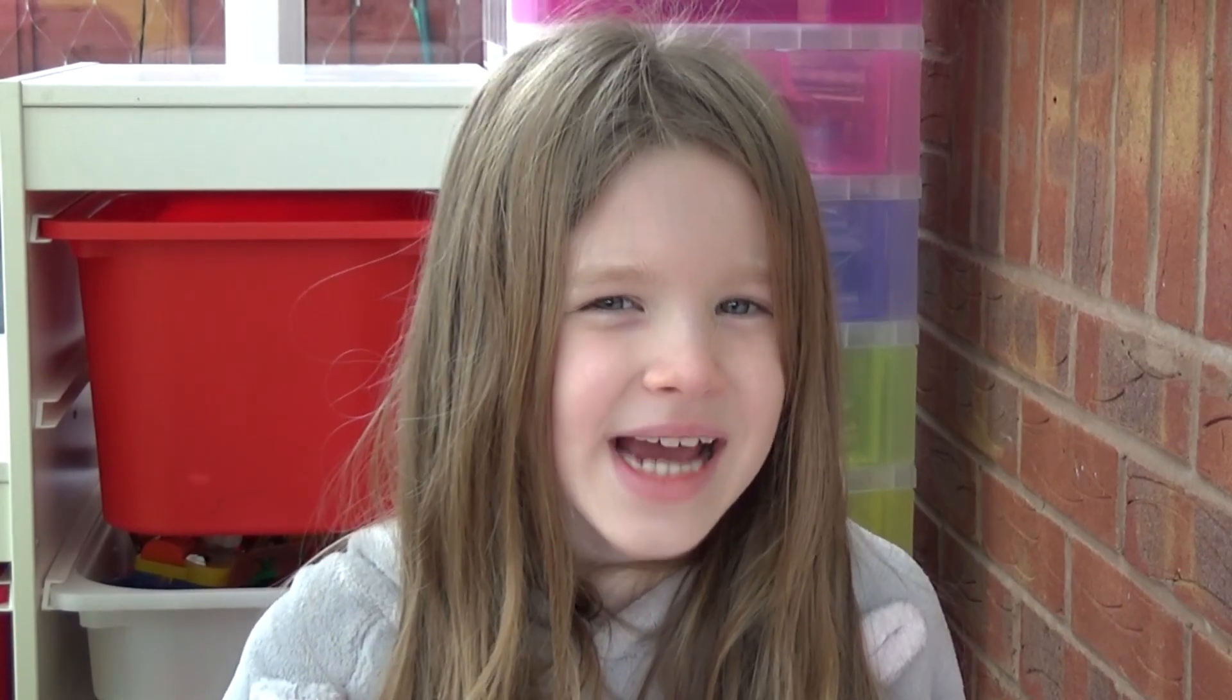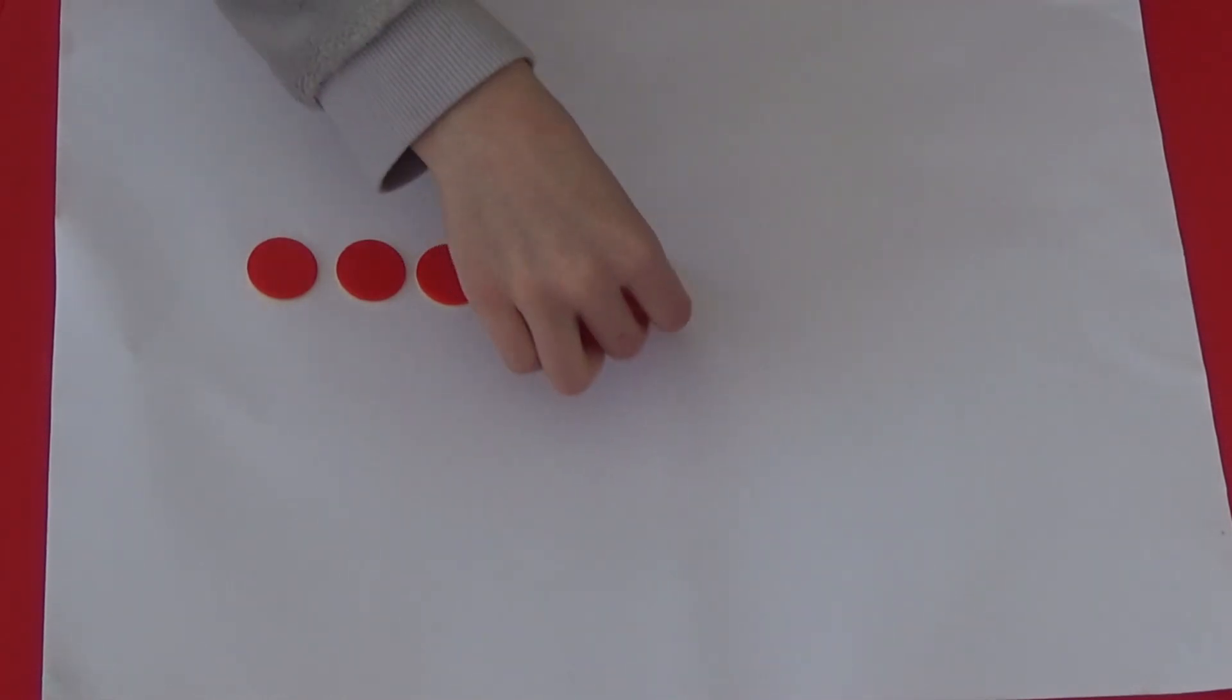The final activity I am going to show you is finding two more or two less. We will start with two more. If I am finding two more than four I would set up four red counters and add two yellow counters. If I add them together I can see we have six counters. So two more than four is six.